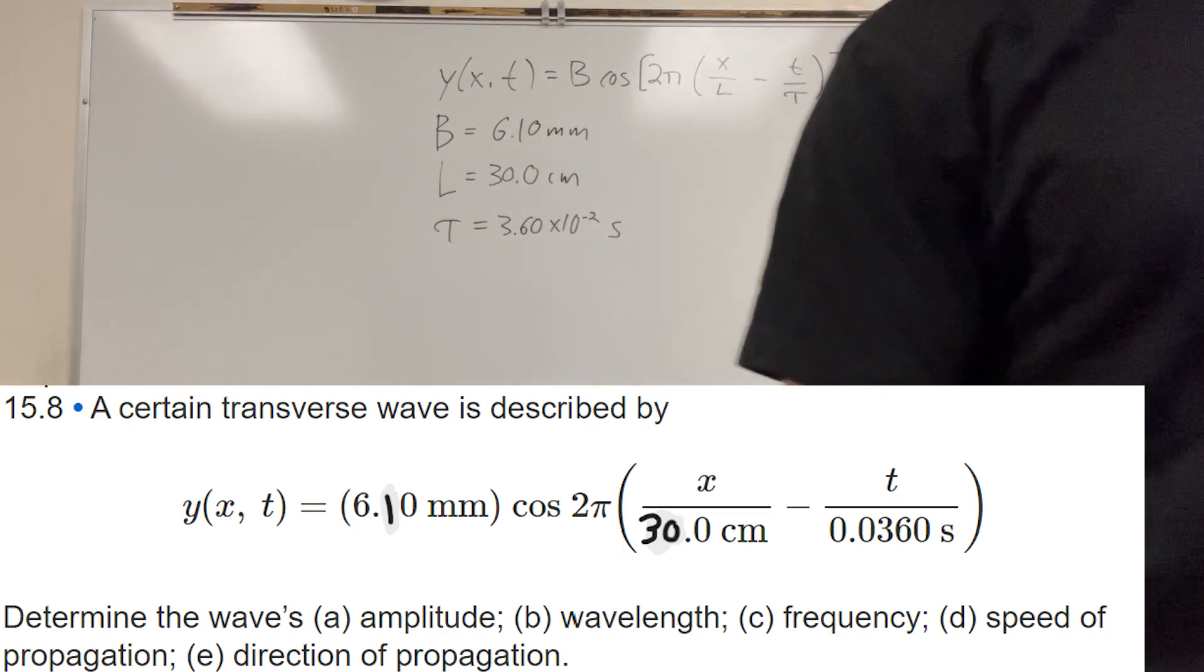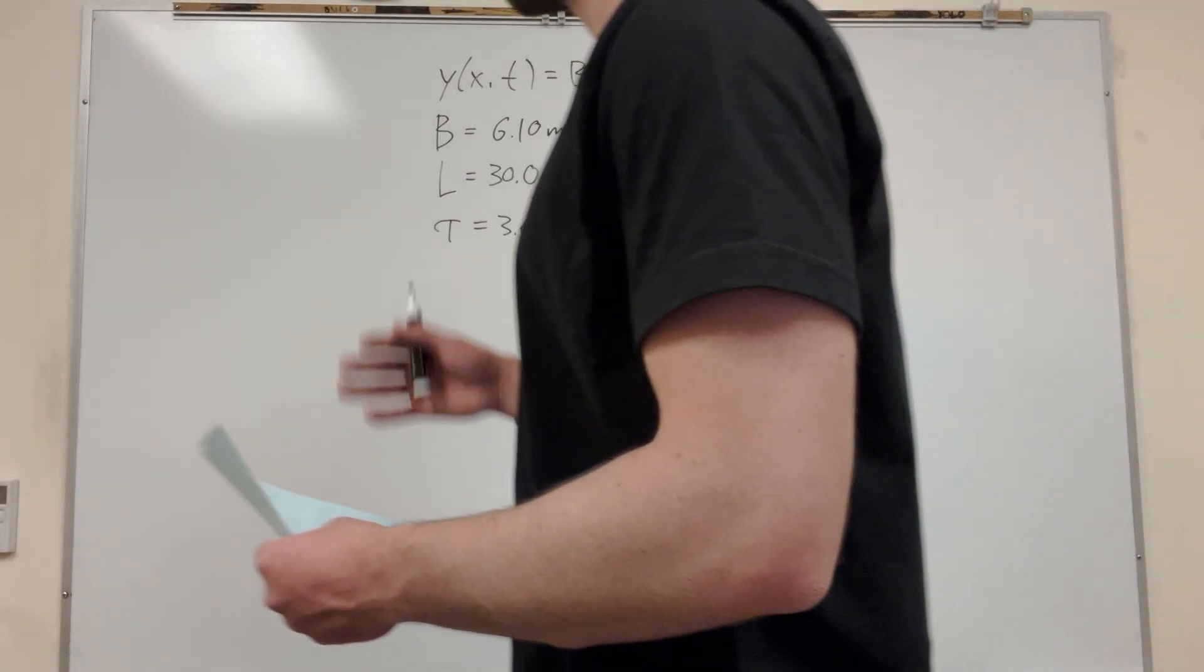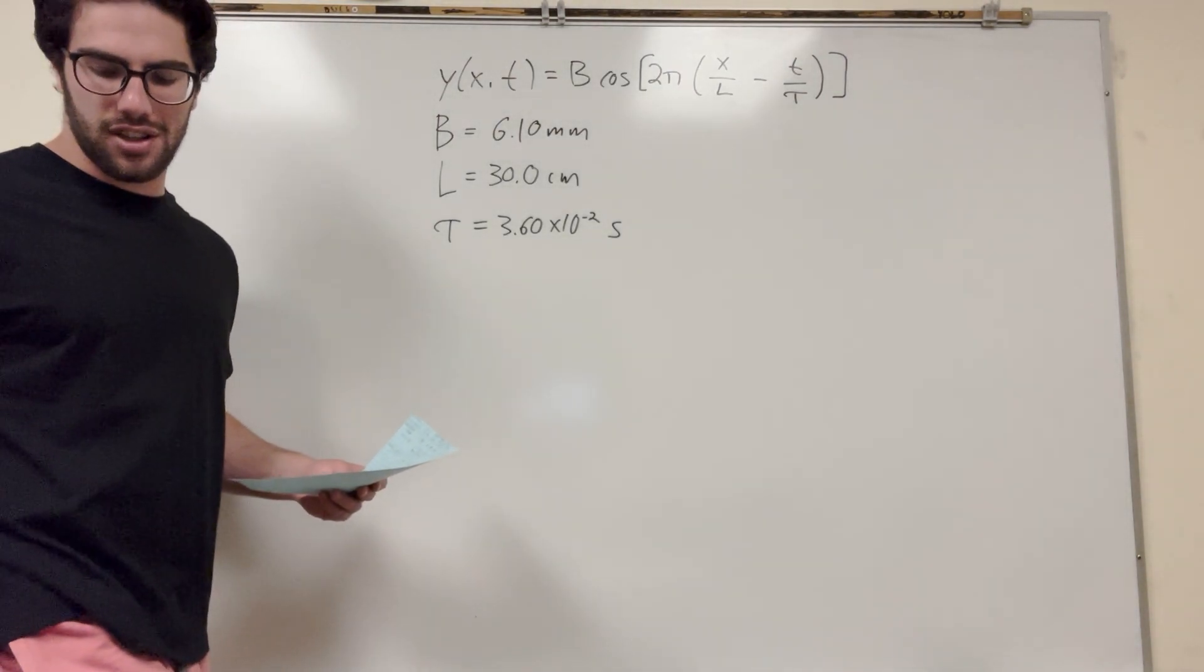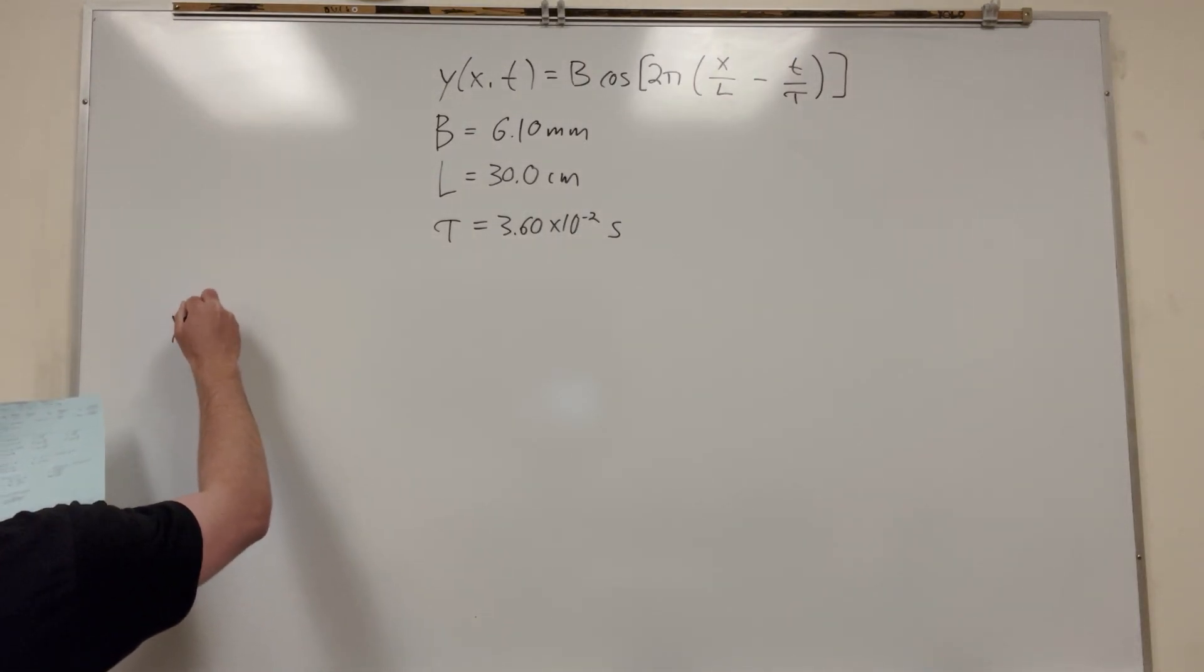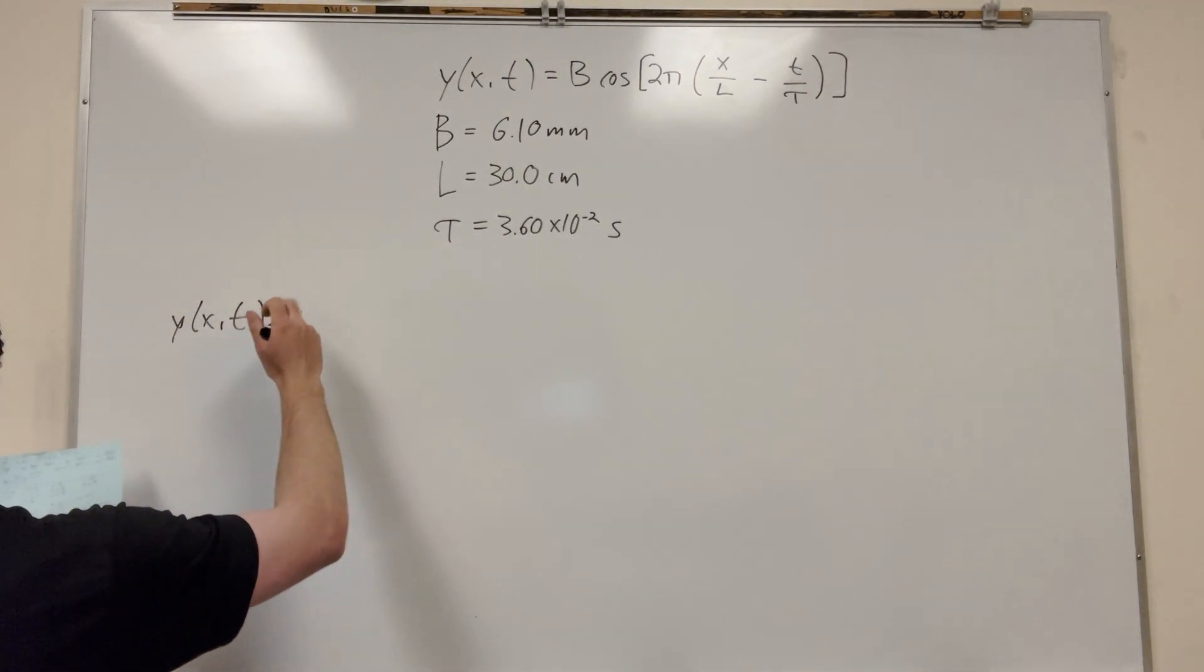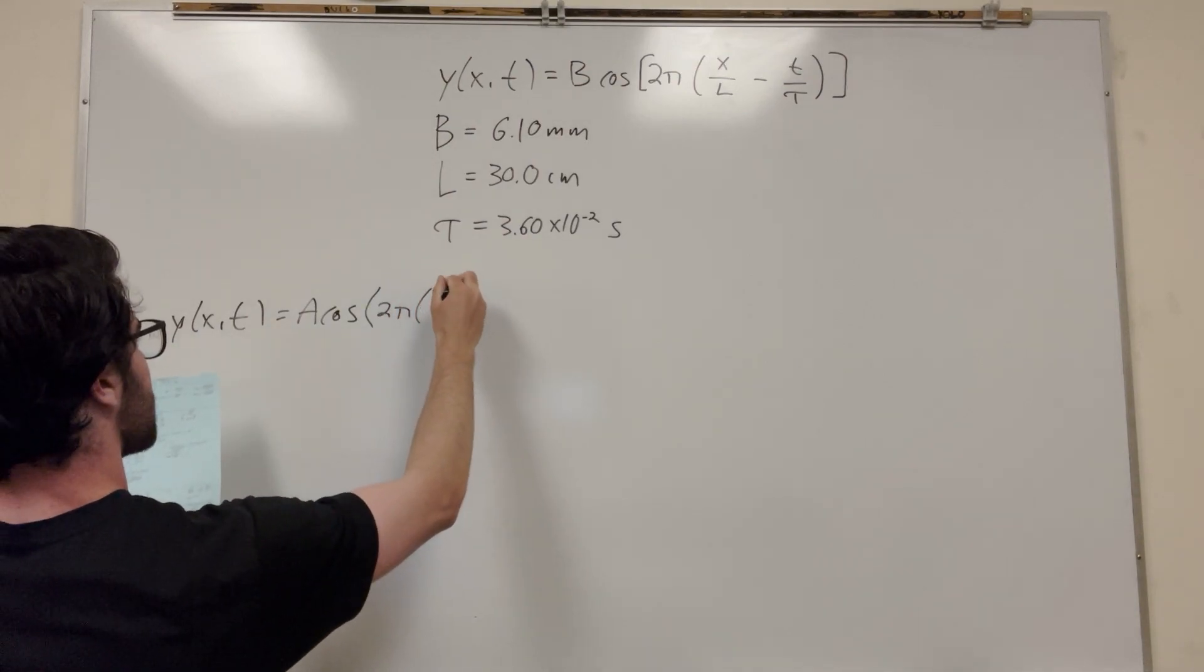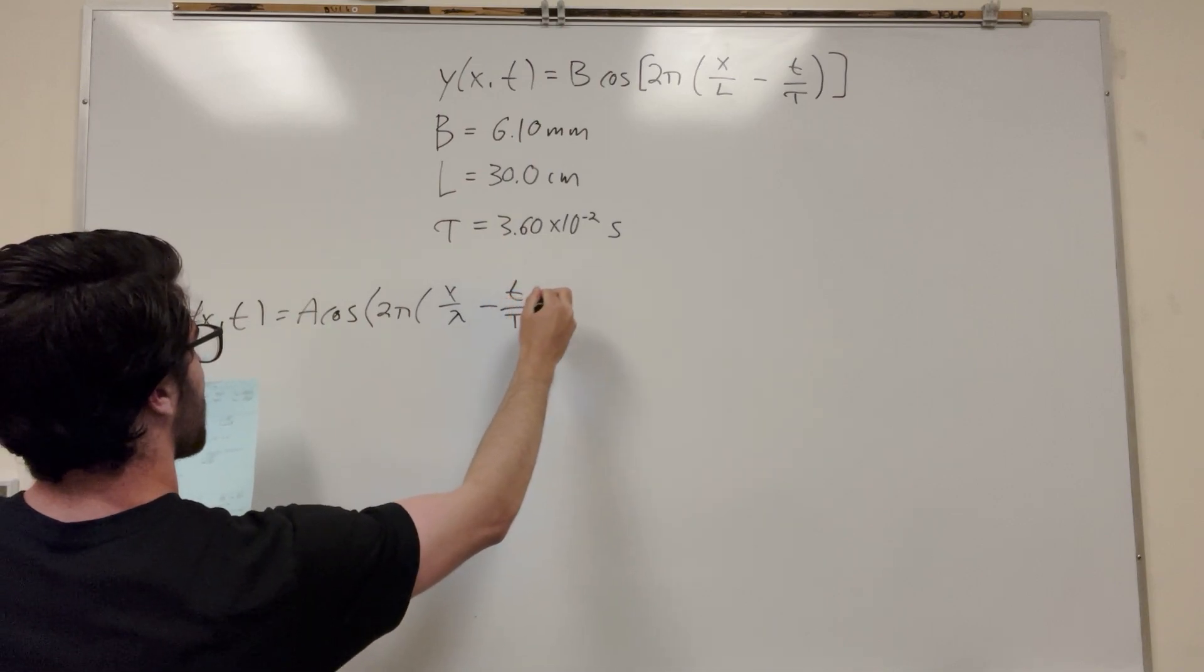Part A wants you to determine the wave's amplitude. This function is basically in the form of another function that you should learn or have on hand. That function is y(x,t), which means that y, its vertical position, is a function of its position and its time. What that is, is it's equal to A cosine 2π x over